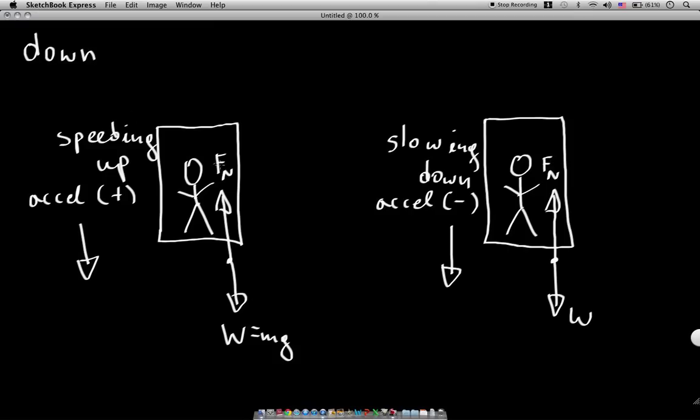Now, in the instance of speeding up and slowing down, going in the down direction, we have to break this up a little bit differently than what we did in the up direction. So in this case, we're going down. So down, I choose to be positive. So that's the positive direction.